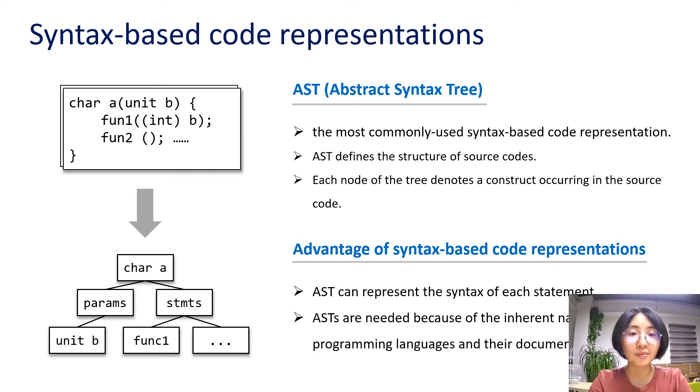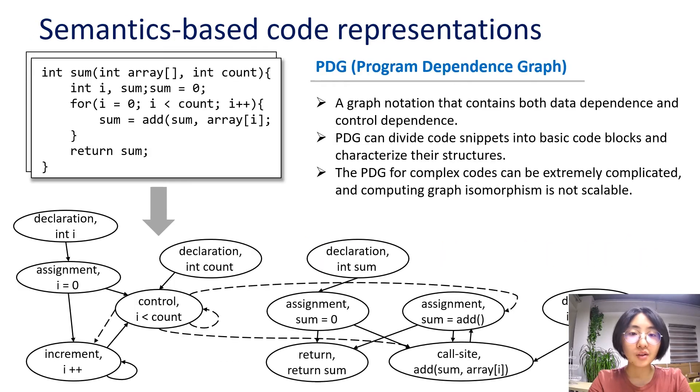Another commonly used semantics-based code representation is PDG. It is a program dependency graph. PDG is a graph notation that contains both data dependencies and control dependencies. Some studies try to capture the semantics feature by extracting the PDG. The figure shows the PDG corresponding to this program fragment. The dotted line and the solid line represents the data flow and control flow respectively.